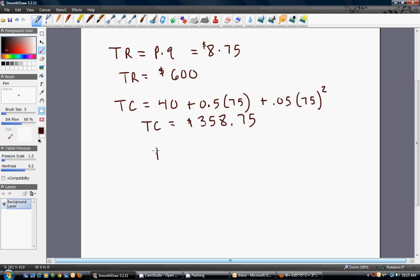The firm's profit is total revenue minus total cost. So $600 minus $358.75. The firm has profit, in this example, of $241.25. Okay, thank you.